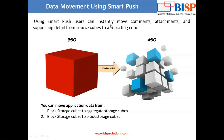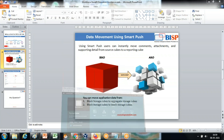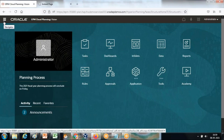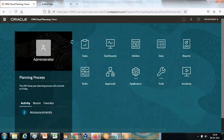Using Smart Push, a user can instantly move data, comments, attachments, and other supporting details from your source cube, which is the input cube, to your reporting cube, which is the ASO cube. So possible data movement can be block storage to ASO, or block storage to another block storage. In today's example I will be using one input cube and one ASO cube.